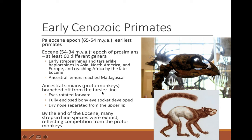Proto-monkeys first branch off during this period. Their eyes start to rotate forward, giving them stereoscopic vision — though in proto-lemurs like Cope lemur, eyes were still more on the side of the head. They develop a fully encased eye socket to protect the eyes, their dry nose starts to separate from the upper lip, and they lose the vomeronasal organ. By the end of the Eocene, many strepsirrhines were extinct because proto-monkeys were far better at exploiting the fruit-eating, diurnal niche.